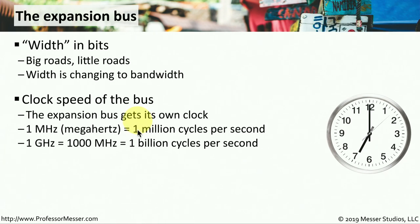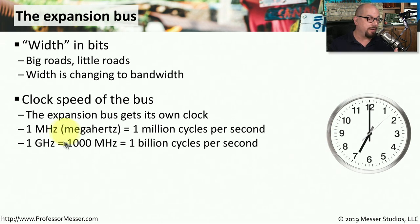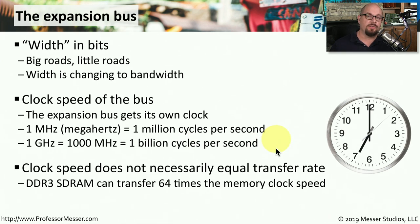For example, a 1 megahertz clock rate or 1 MHz means that you can send 1 million cycles or 1 million pieces of information in one second. A clock rate running at 1 gigahertz is 1,000 megahertz or 1 billion cycles per second. To confuse things further, the clock rate that you'll see in these specifications doesn't necessarily equal the transfer rate of the data across that bus.